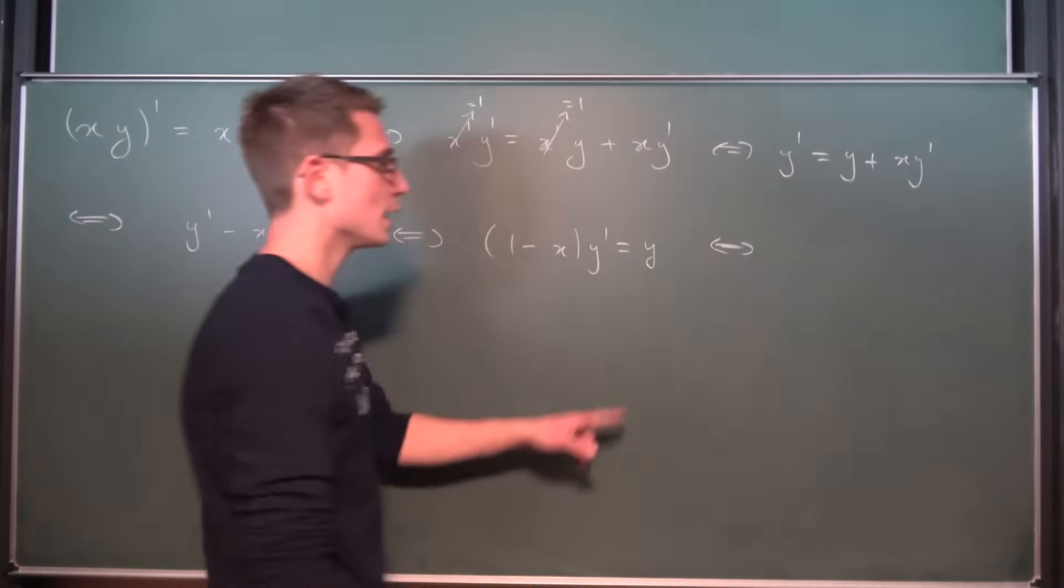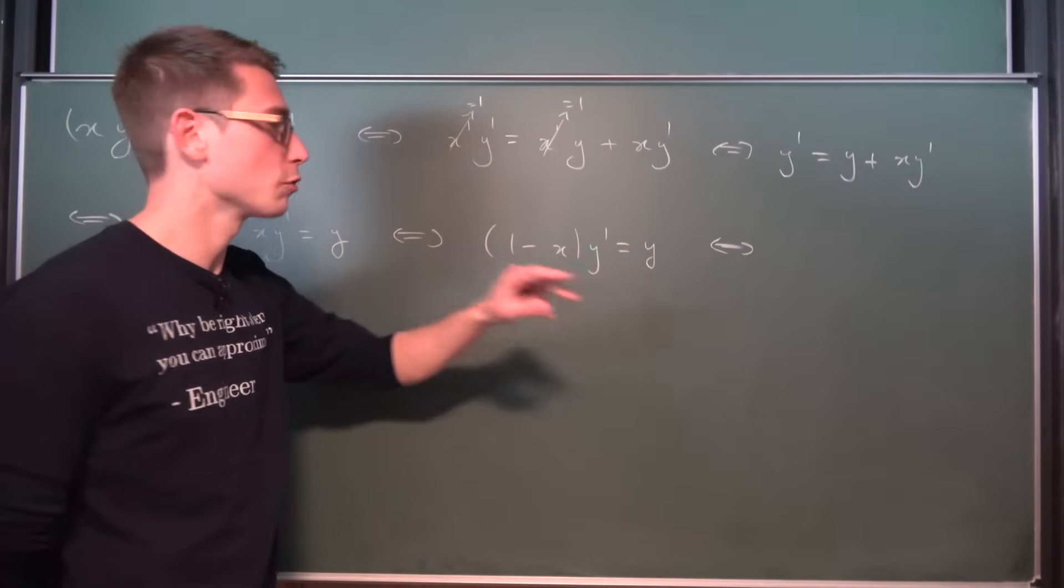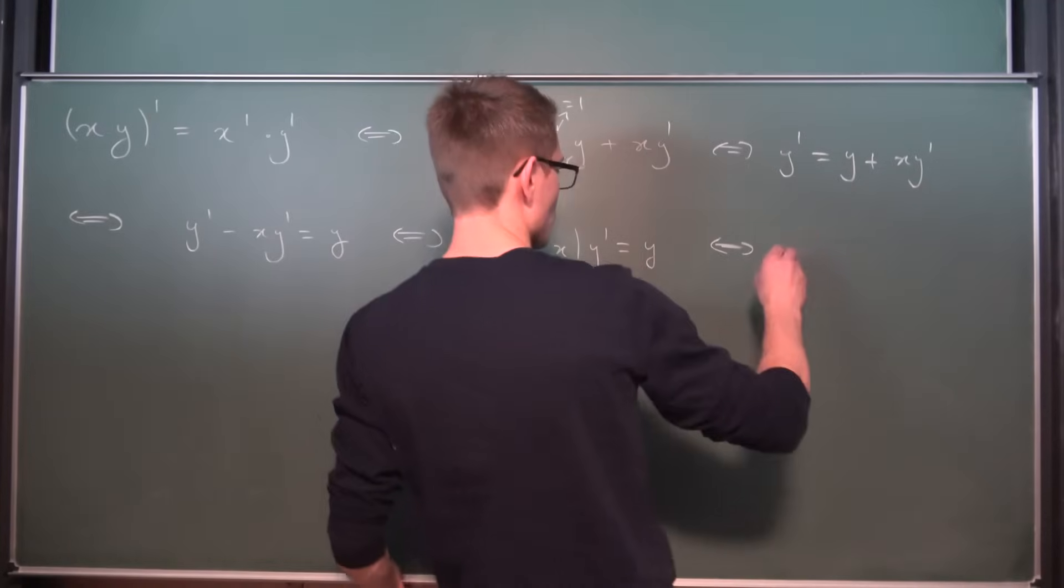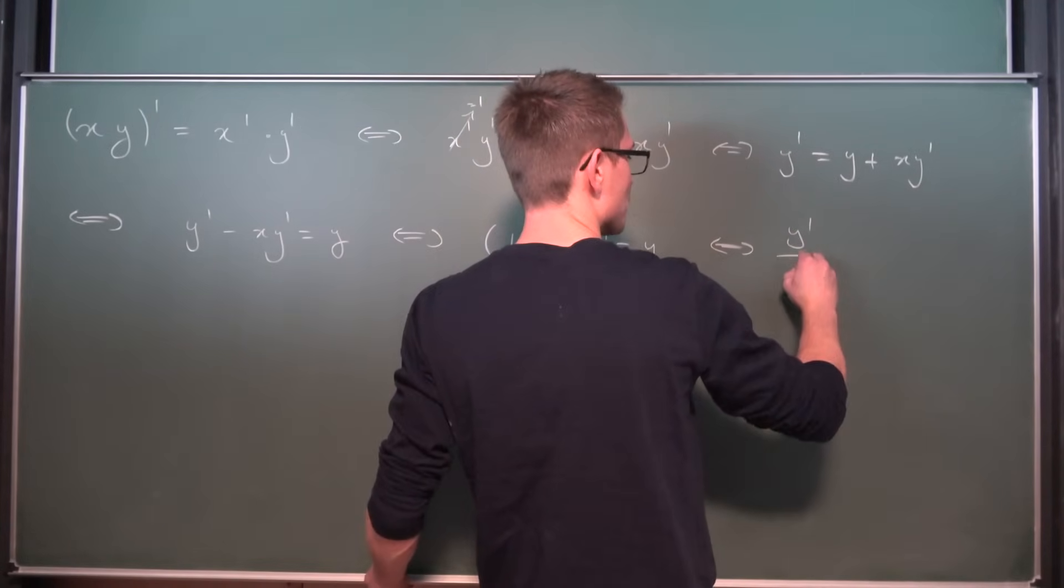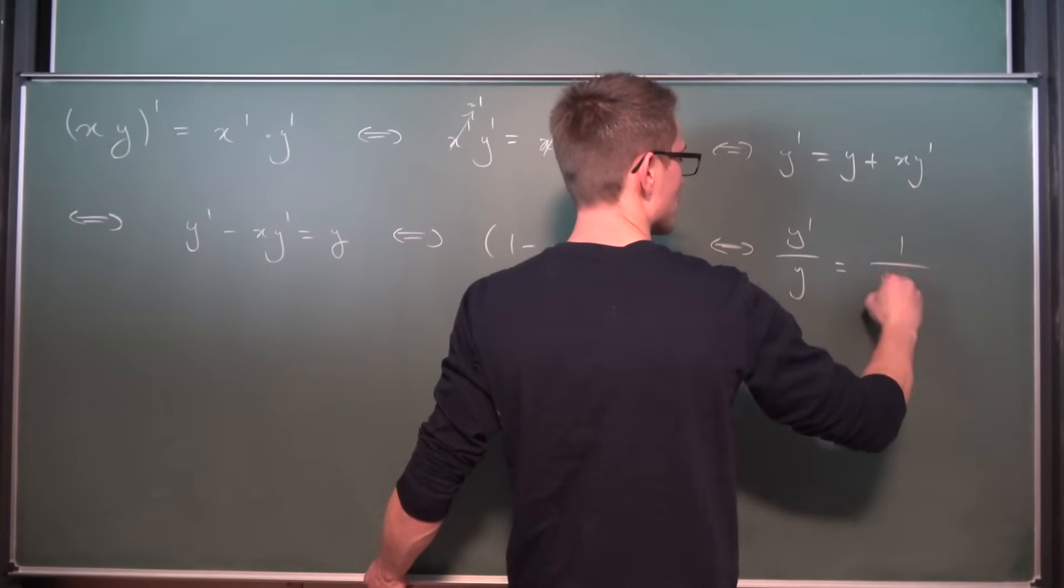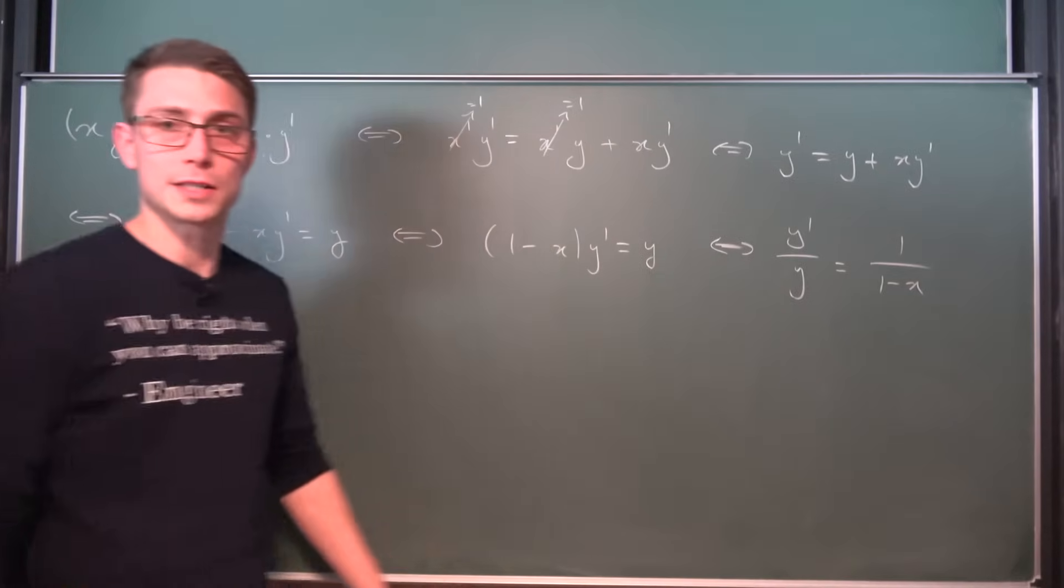And also y must not be the zero function. If all of this holds, we are going to get that y prime divided by y is 1 divided by 1 minus x. Okay, thus far that's good.